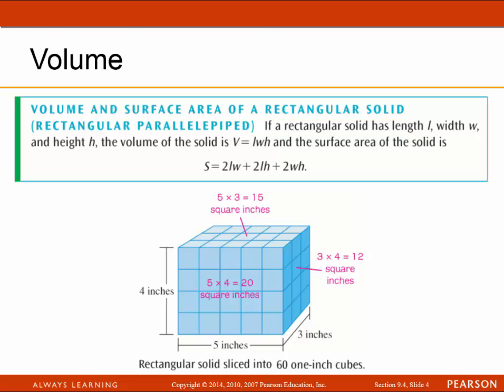In this example, we have a 5 by 3 face, which is 15 square inches. The 5 by 4 face is 20 square inches, and the 3 by 4 face is 12 square inches. Essentially, we can slice this solid into 60 one-inch cubes.